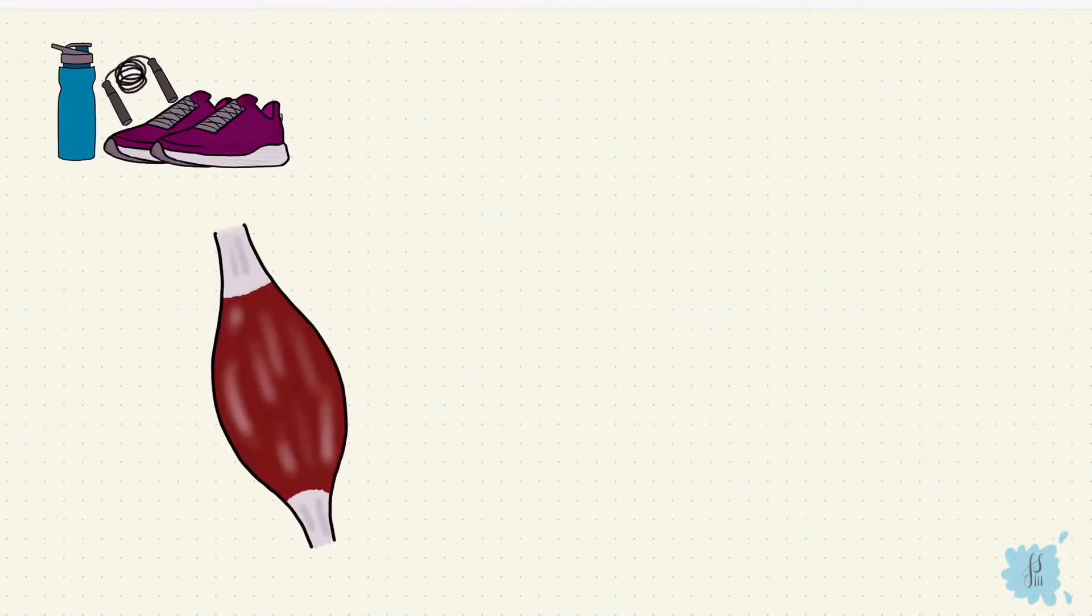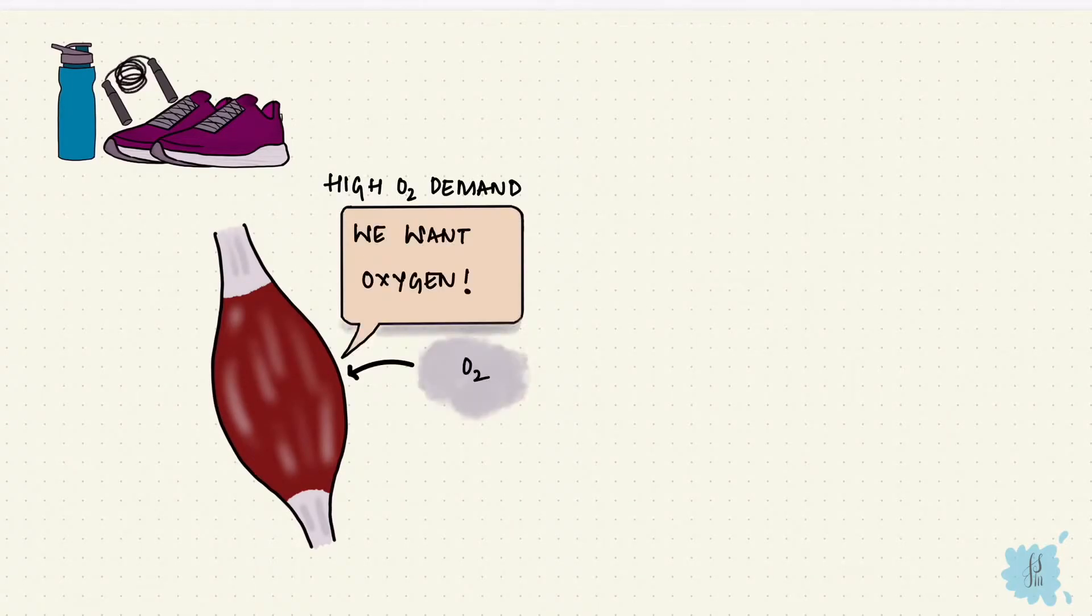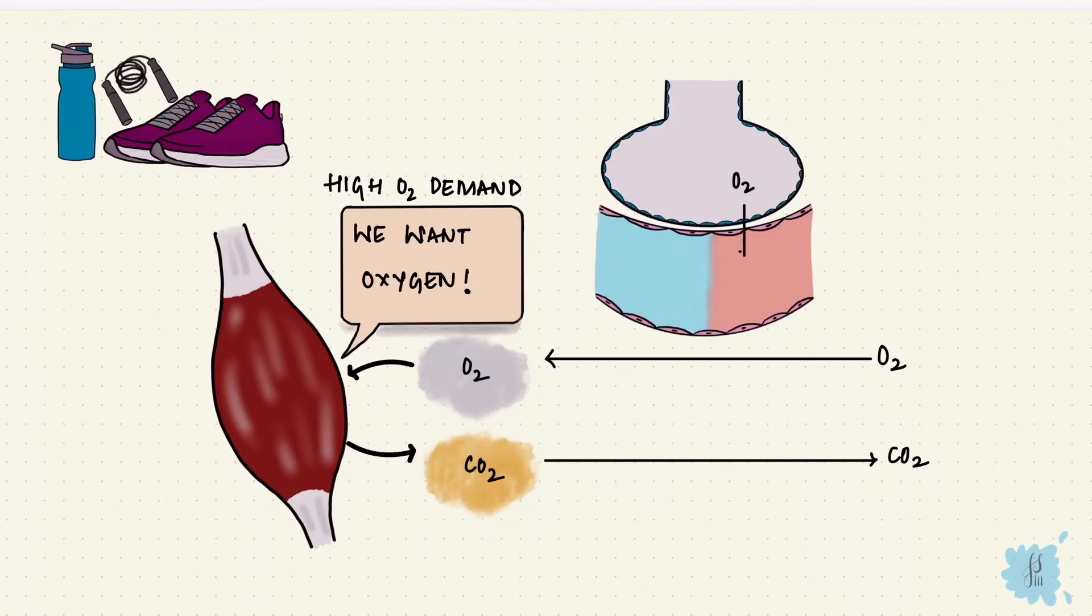During exercise, the exercising muscles have a high oxygen demand. And from increased tissue metabolism, more carbon dioxide is produced. For more oxygen to get in and to get rid of the excess carbon dioxide, alveolar ventilation has to increase. And it does.